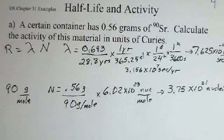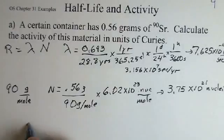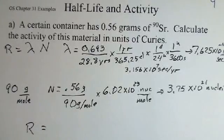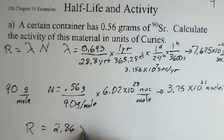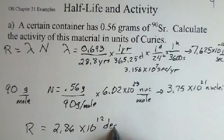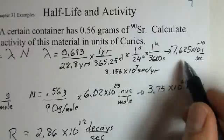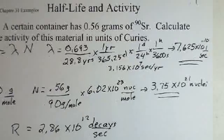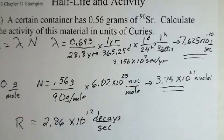We now combine these, where we have a calculation R is lambda times N. So the R value, and again, you should pause here and do this calculation on your own. But when we multiply these two out, we get 2.86 times 10 to the 12th decays per second. And again, we're multiplying the lambda number and the capital N number, the number of nuclei we have.